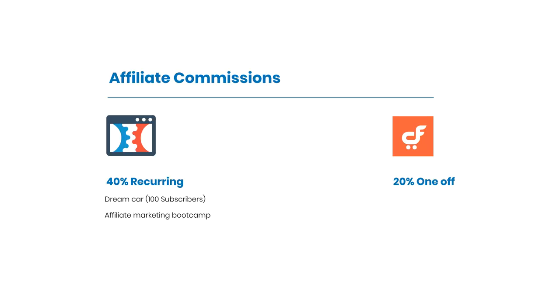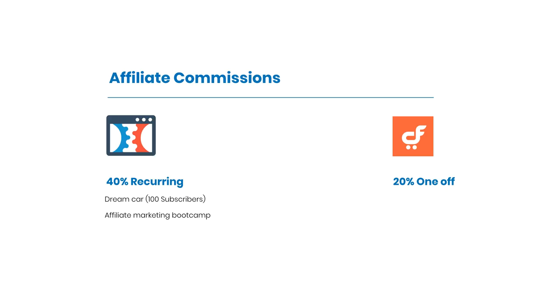Looking at affiliate commissions: ClickFunnels offers a 40% recurring commission, so as long as someone stays on ClickFunnels you earn 40% per month. They also have a Dream Car program — get 100 subscribers and they contribute toward your dream car — plus an Affiliate Bootcamp training program. CartFlows offers only a flat 20% one-off payment per customer, so ClickFunnels is clearly more attractive for affiliate marketers.